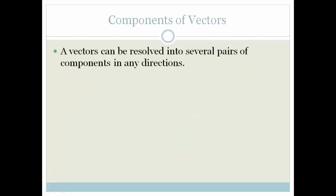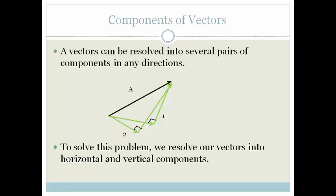Now what's important is that vectors can be resolved into several pairs of components in any direction. Remember the components are always 90 degrees to each other. So that really doesn't help us too much. What we do as a rule is we always resolve our vectors into horizontal and vertical components, and that helps us a lot.